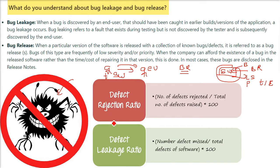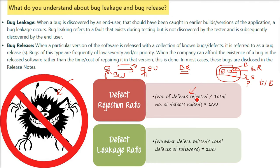Defect leakage ratio: the number of defects missed or leaked divided by the total number of defects, multiplied by 100. Defect rejection ratio: the number of defects which are being rejected divided by the total number of defects raised, multiplied by 100.